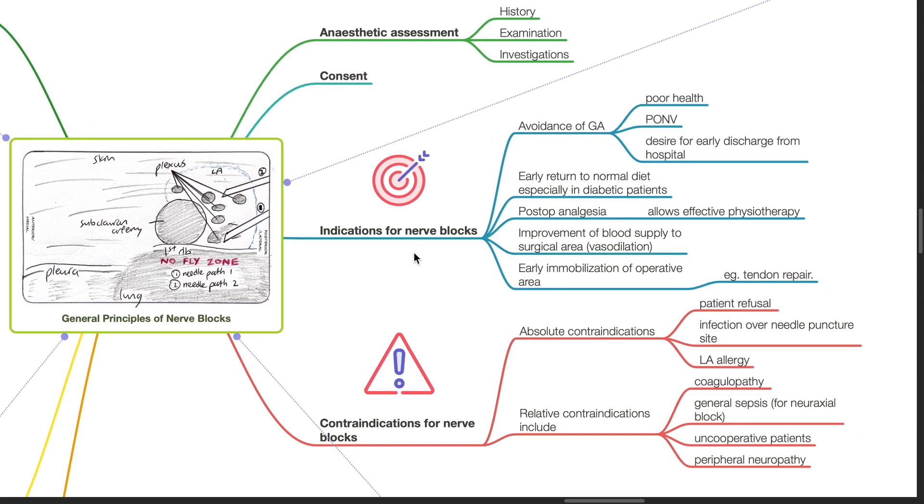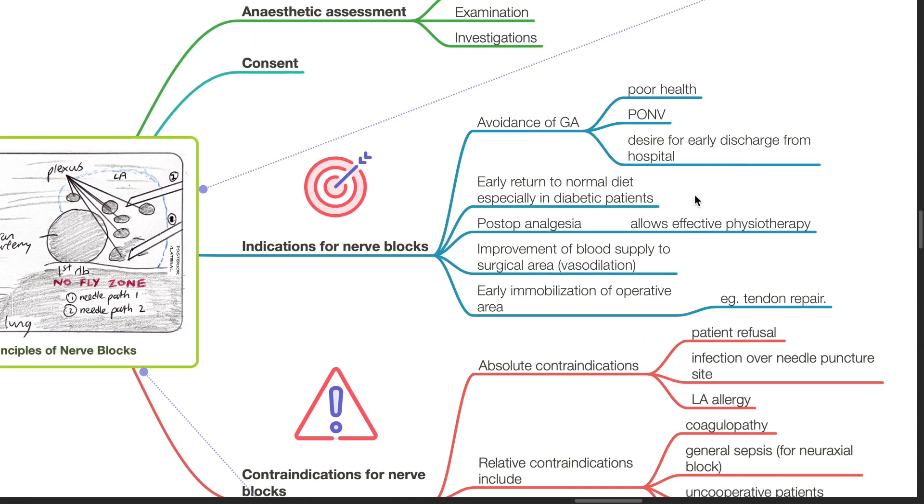Indications for nerve blocks include to avoid general anesthesia due to poor health, post-operative nausea, vomiting or desire for early discharge from hospital, early return to normal diet especially in diabetic patients, for post-operative analgesia which allows effective physiotherapy, improvement of blood supply to the surgical area, and early immobilization of operative areas such as tendon repair.